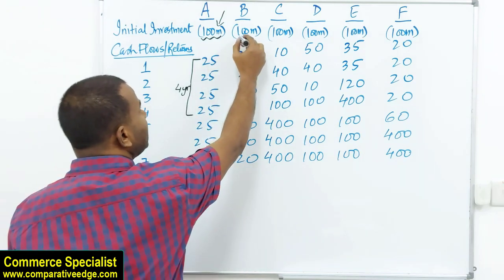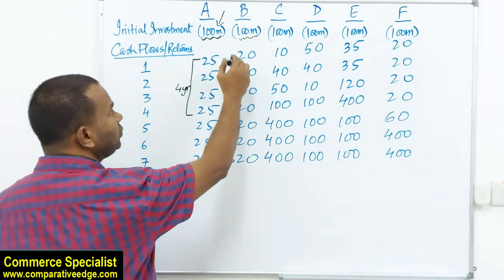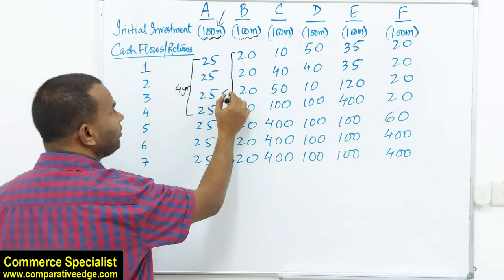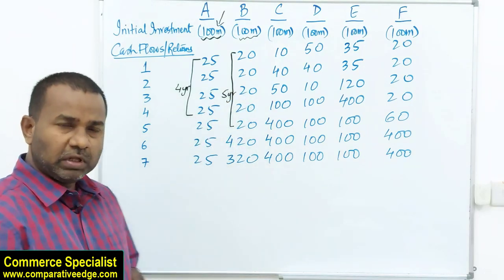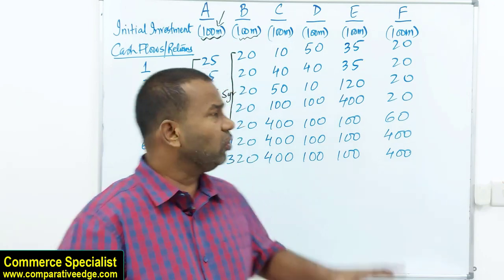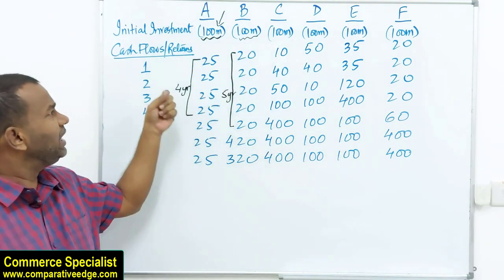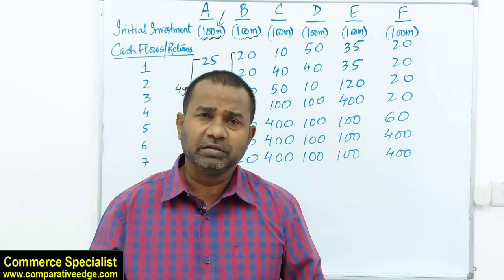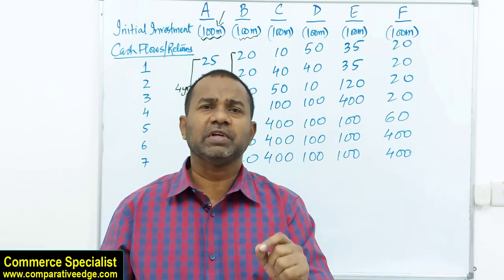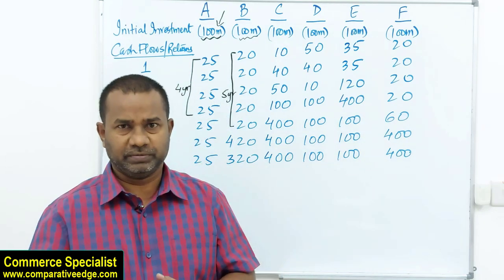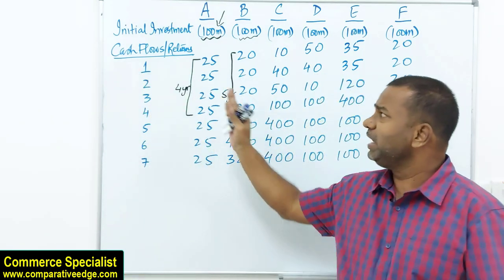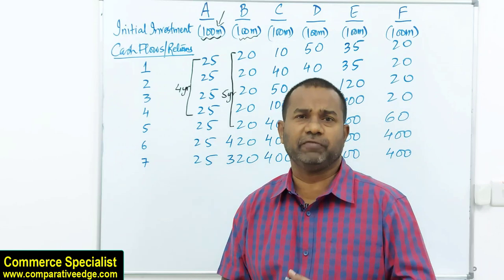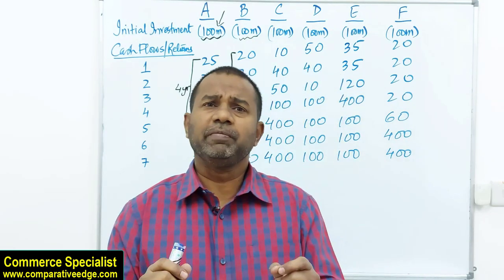Project B has the same initial investment of 100 million, giving returns of 20, 40, 60, 80 million — so the payback for project B is 5 years. Comparing A and B: project A has a payback of 4 years, project B has a payback of 5 years. Obviously A is preferable. The shorter the payback period, the better.